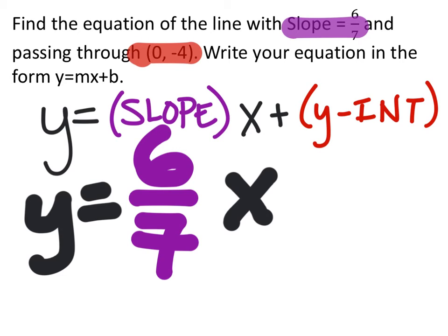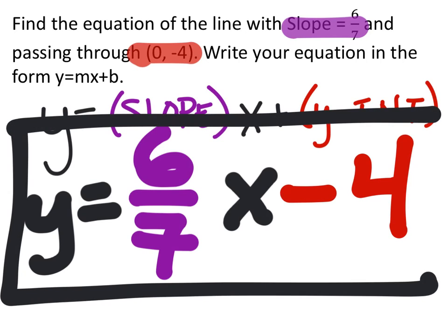So we know that the y value of the y-intercept is negative 4. Now, we could write plus a negative 4, but there's no reason to do that. We can just write this as negative 4 like this. And this is our completed slope-intercept form of the equation.